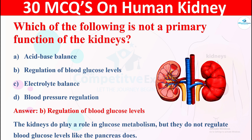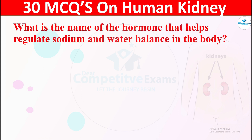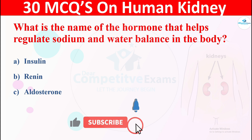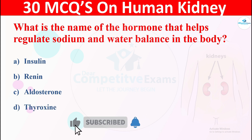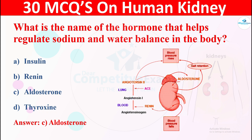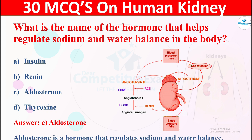Question 11: What is the name of the hormone that helps regulate sodium and water balance in the body? The options are: A) insulin, B) renin, C) aldosterone, or D) peroxide. The correct answer is aldosterone. Aldosterone is a hormone that regulates sodium and water balance.